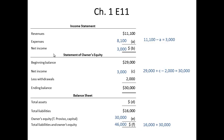Since the accounting equation states total assets equals total liabilities plus owner's equity, D should equal the same amount as F: $46,000. Using and understanding the relationships between the three financial statements and the importance of preparing them in order has allowed us to solve for A through F for the missing numbers on each of the financial statements.